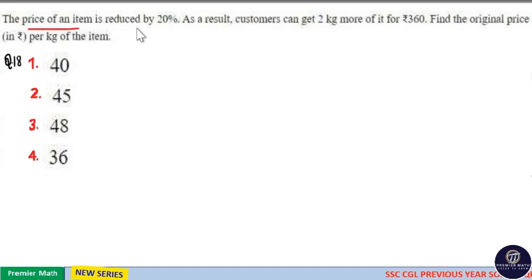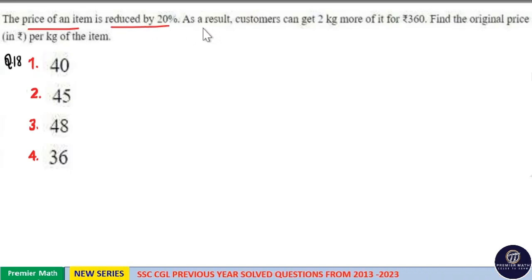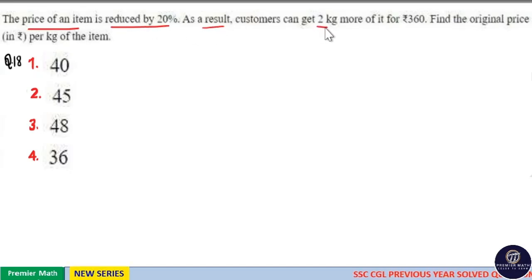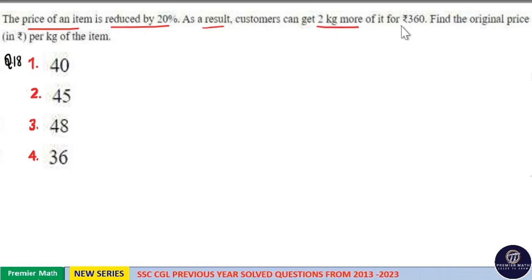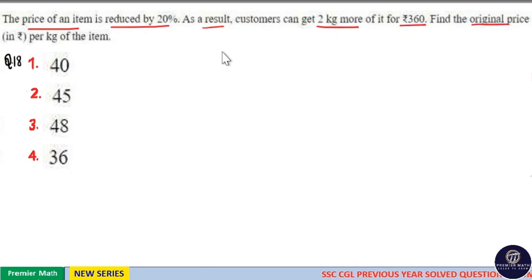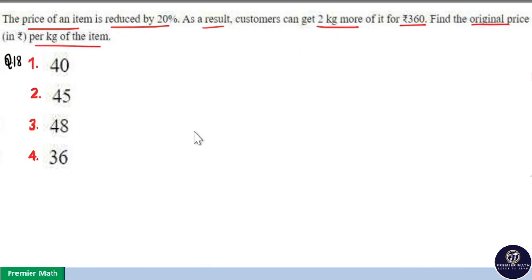Price of an item is reduced by 20%. As a result, customers can get 2 kilogram more of it for Rs. 360. Find the original price per kilogram of the item.